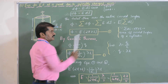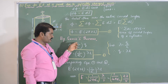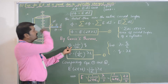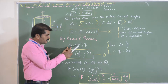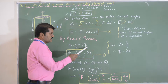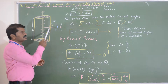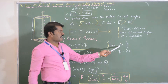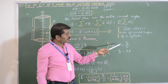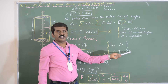By Gauss theorem, the total flux over any closed surface equals 1 by epsilon naught times the total charge enclosed, so phi equals Q by epsilon naught. Here, Q is the charge present inside this Gaussian surface. We know that lambda, the linear charge density, equals charge per unit length, so Q equals lambda times l.